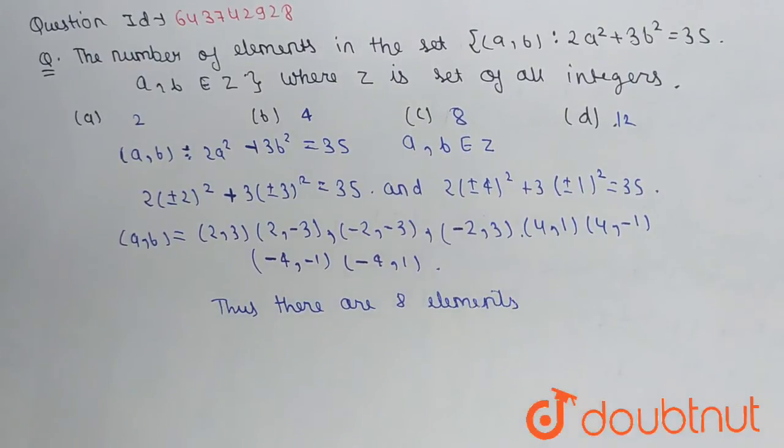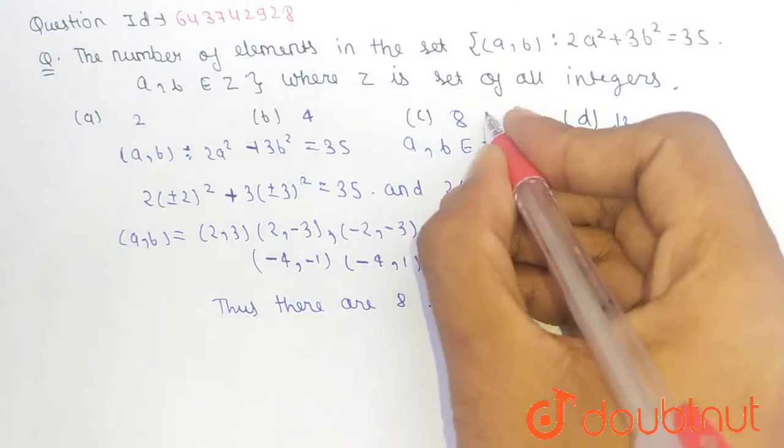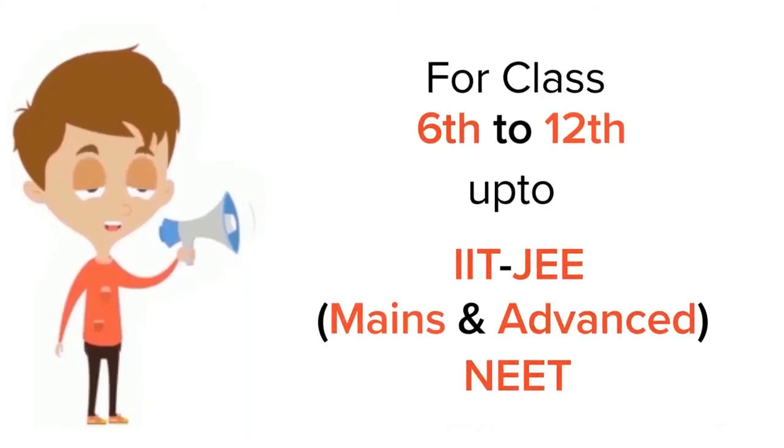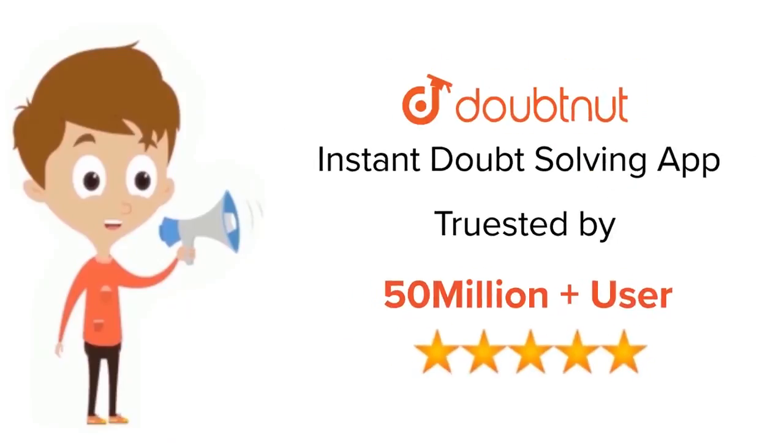the answer of this question will be option C, which is 8. Thank you. For class 6-12, IIT-JEE and NEET level, trusted by more than 5 crore students, download Doubtnet app today.